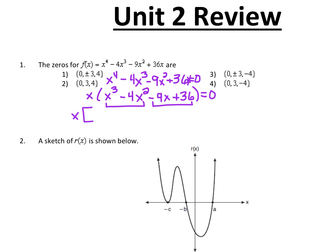So here, you want to look at your first two terms and say: I could take out an x squared. And when I do, that will leave me with x minus 4 in parentheses. And out of the next two terms, I can pull out a 9 — but because this first term is negative, we always pull out the sign of the first term, so we're going to pull out a negative 9, which will leave me with x minus 4. 36 divided by negative 9 is negative 4. So now I'm going to close my bracket.